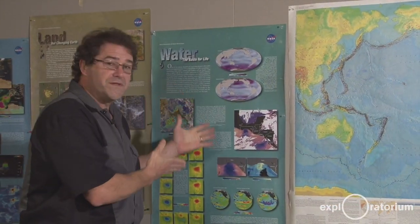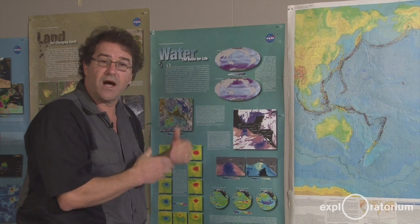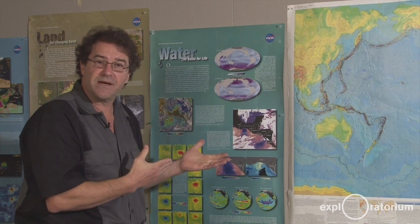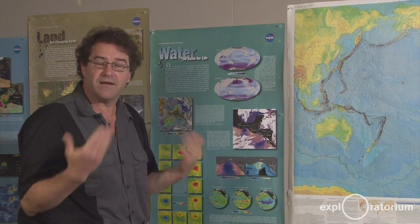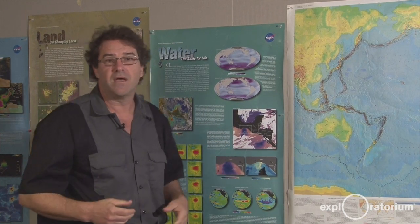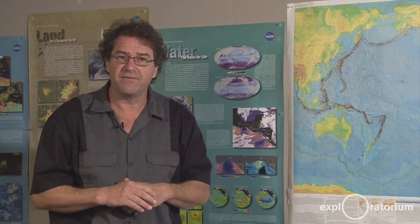The Earth's ocean currents are caused by differences in temperature — convection. The Sun is trying to cool itself off. The convection cells on the surface of the Sun could be the size of continents. Some of them could be the size of the Earth.